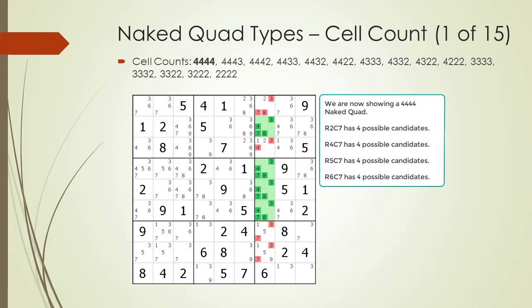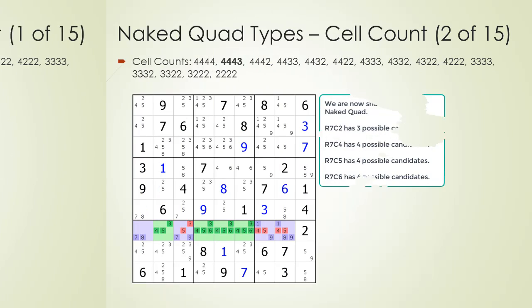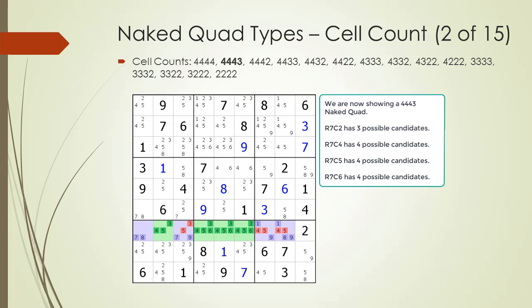Next we are going to discuss cell count configuration. There are 15 different cell count configurations. We are currently showing a 4-4-4-4 naked quad now highlighted in green — 4 cells each with 4 possible candidates. We are also showing a 4-4-4-3 naked quad — 3 cells with 4 possible candidates and 1 cell with 3 possible candidates. In the typing used in this video, 3-4-4-4 is the same thing as 4-4-4-3; the order of the cell counts is not a different type — all counts are ordered from highest to lowest.